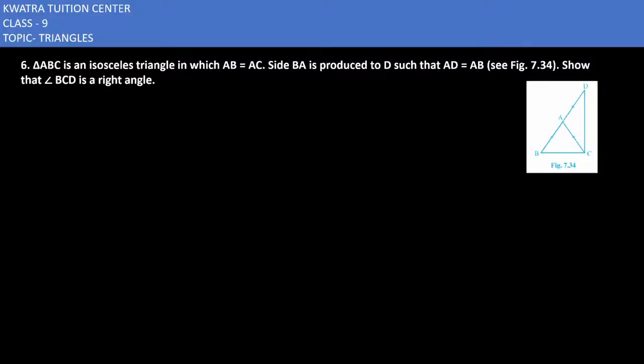Let's start with question number 6. It says ABC is an isosceles triangle in which AB is equal to AC. Side BA is produced to D such that AD is equal to AB. Show that angle BCD is a right angle.